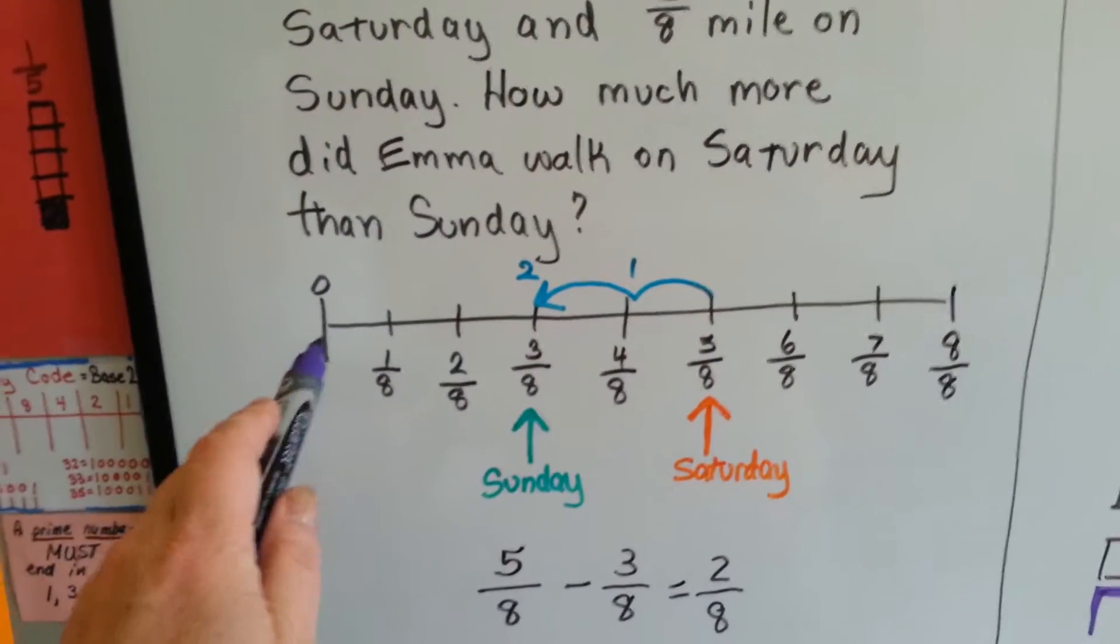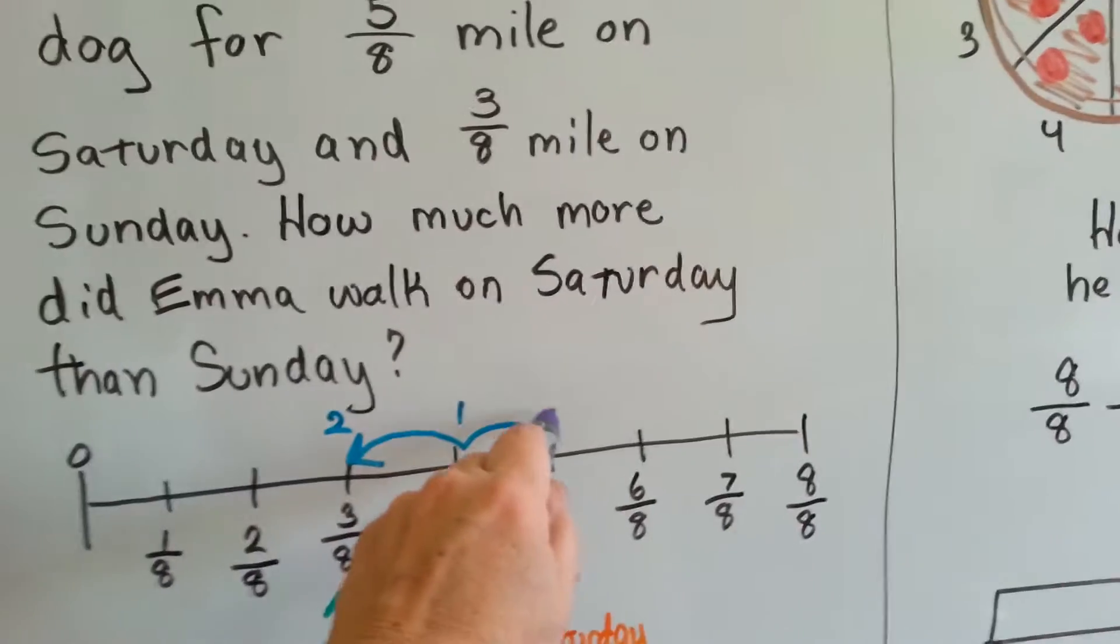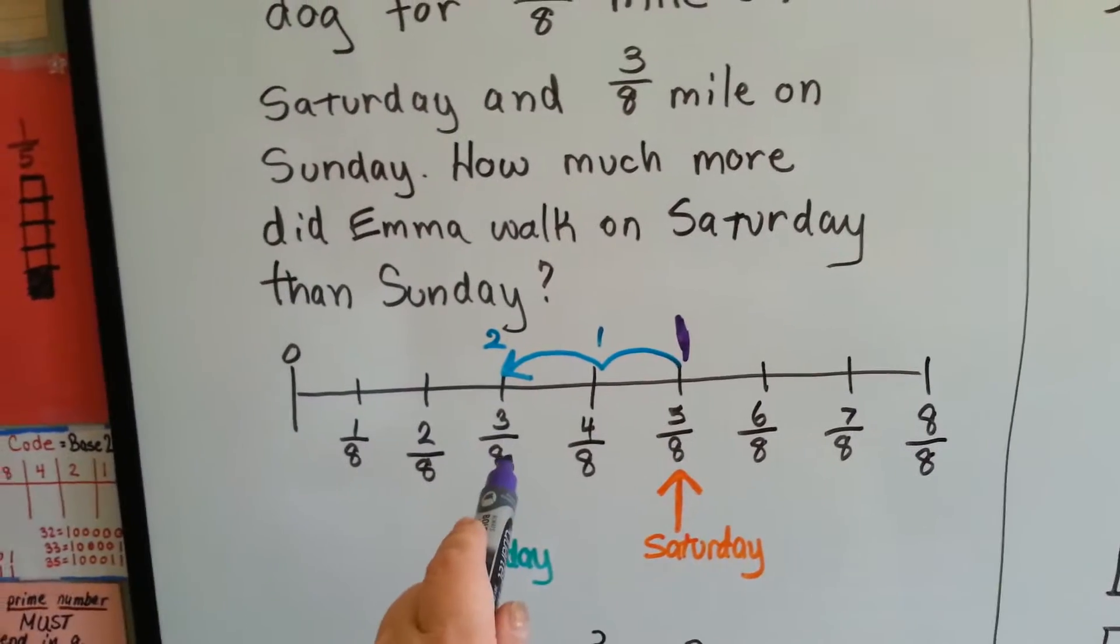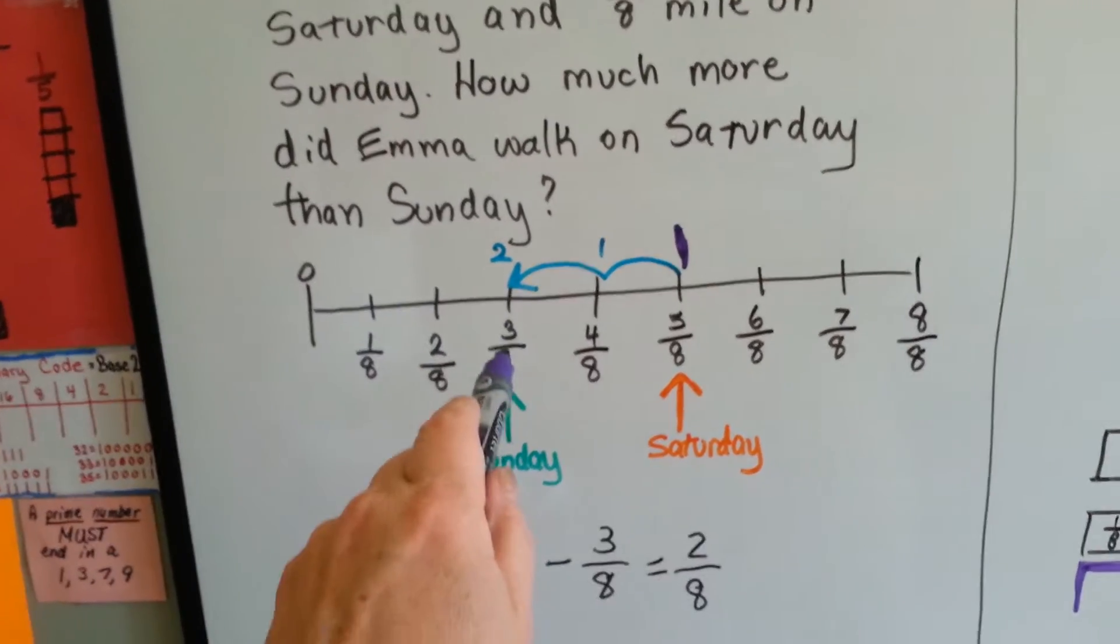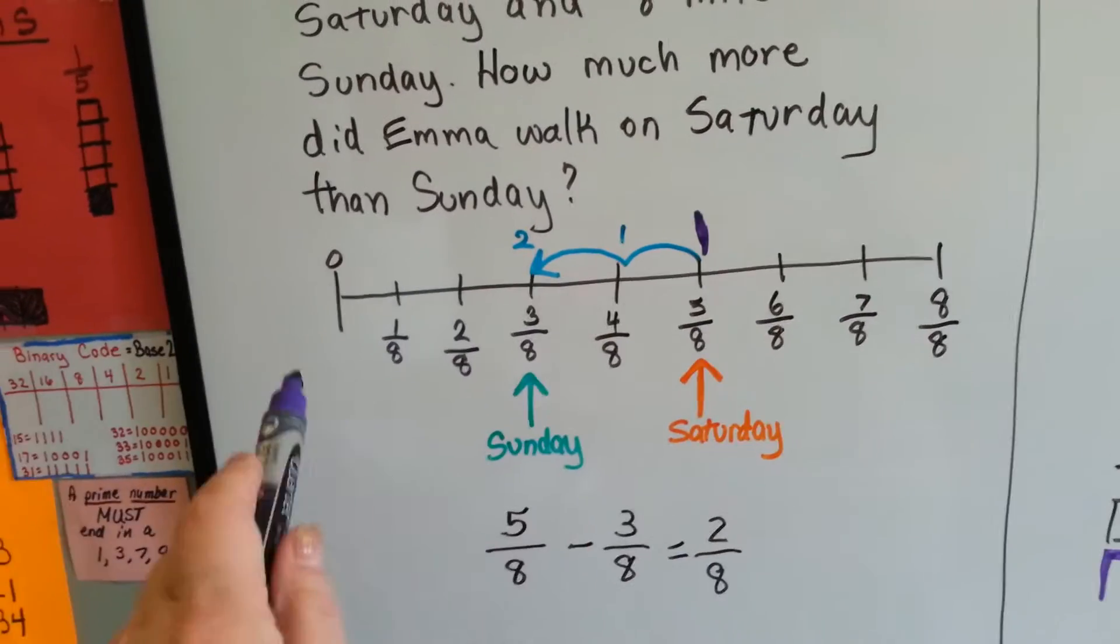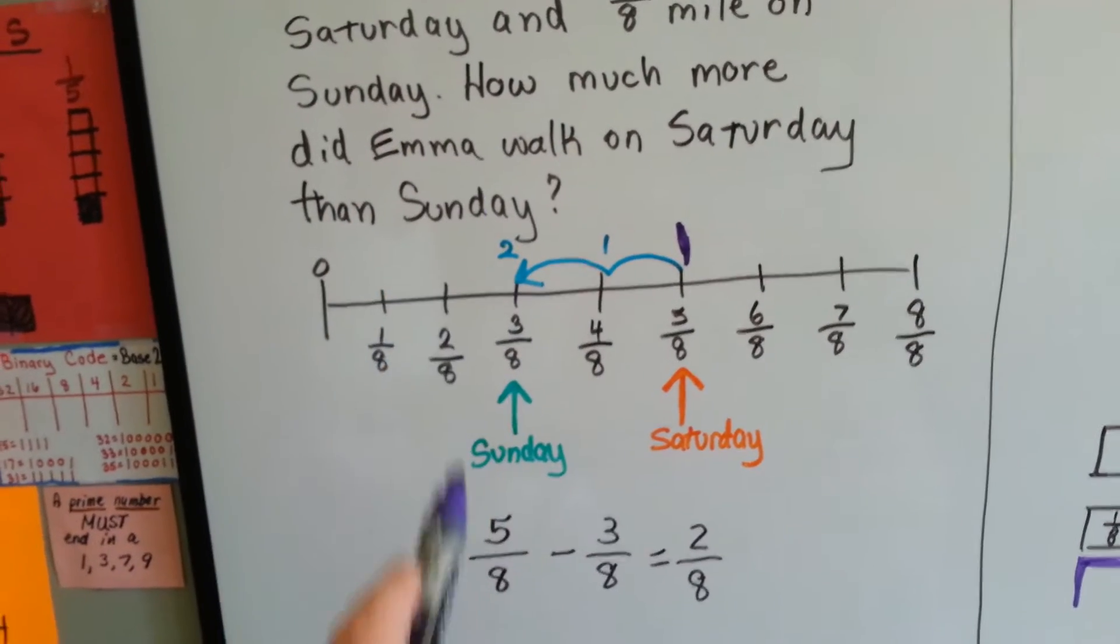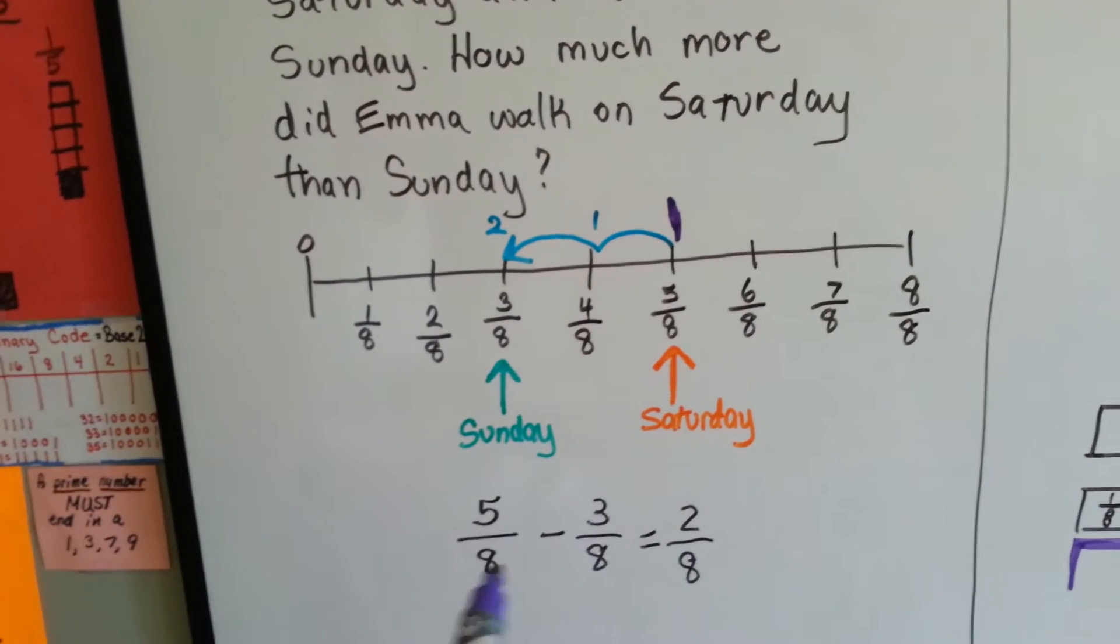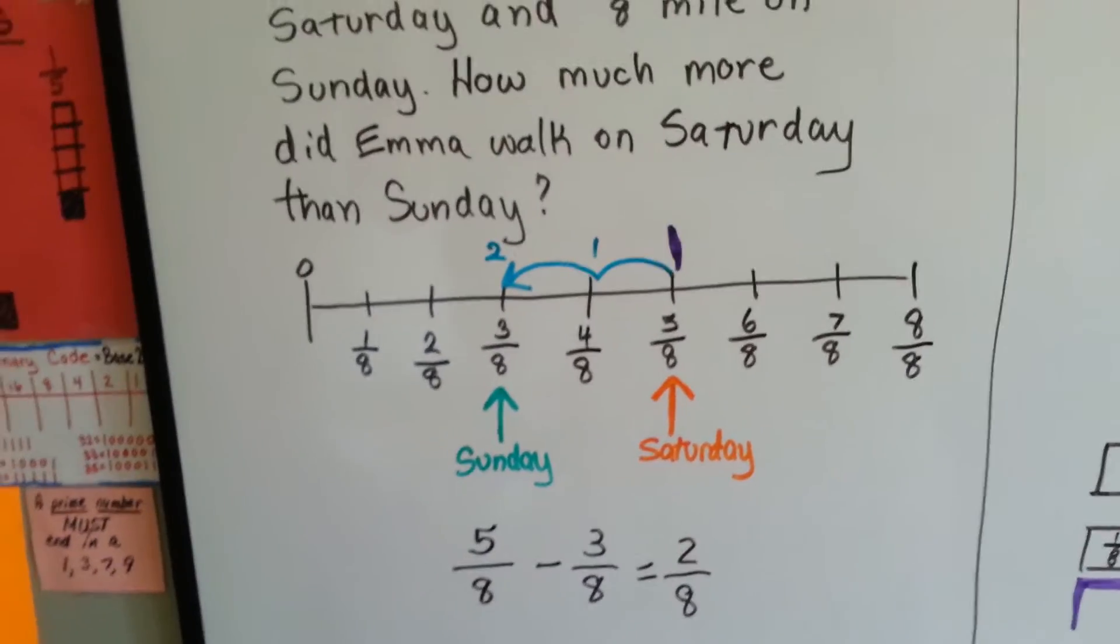Well, we've got a number line. And here, if you can see, she did five-eighths on Saturday. So we marked the five-eighths spot on Saturday that she walked. But on Sunday she walked three-eighths. So we're going to go back one, two, to the three-eighths, and we know that the difference is two-eighths. Because we're describing eighths, the denominator is going to be the same because we're talking about the same number of parts. So five-eighths take away three-eighths would be two-eighths. We slide the denominator across and subtract the numerators. Five minus three equals two.